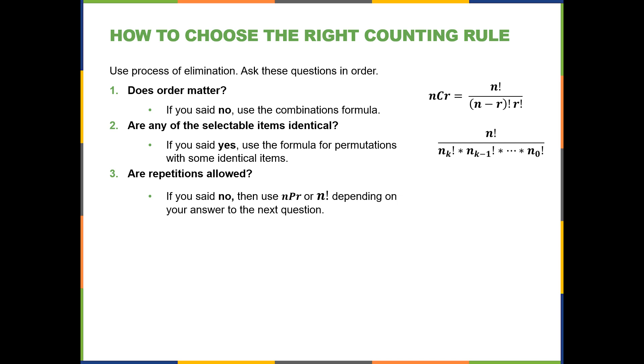If you said no, then you're going to use either the nPr formula or the n factorial, and that's because both of those formulas require that you are doing selections without replacement. In other words, this is for dependent trials.